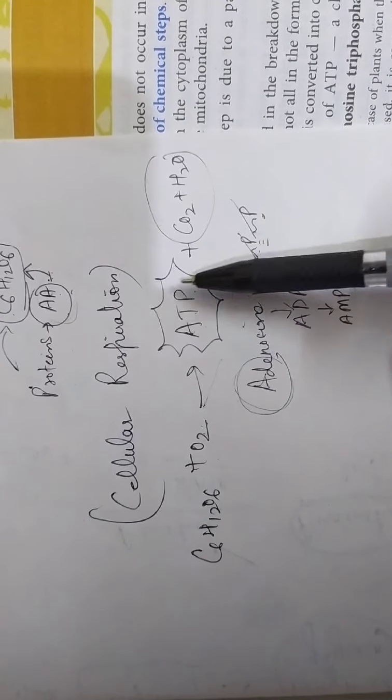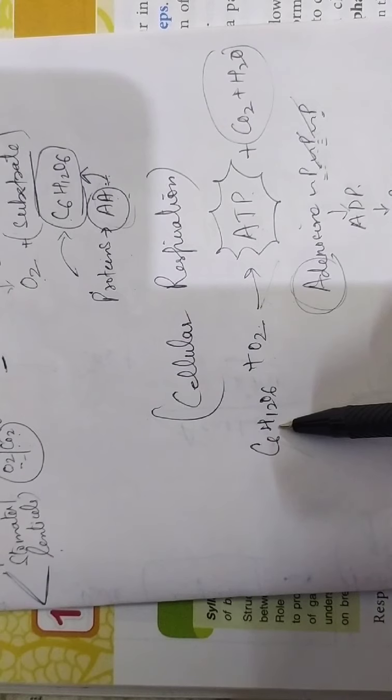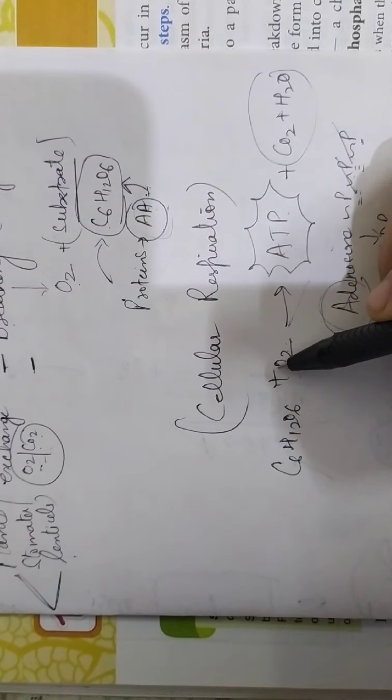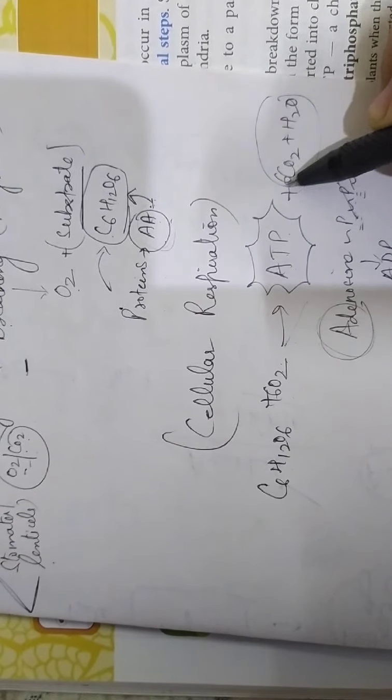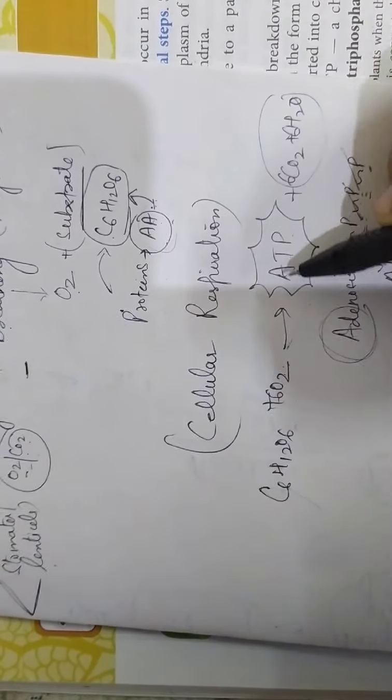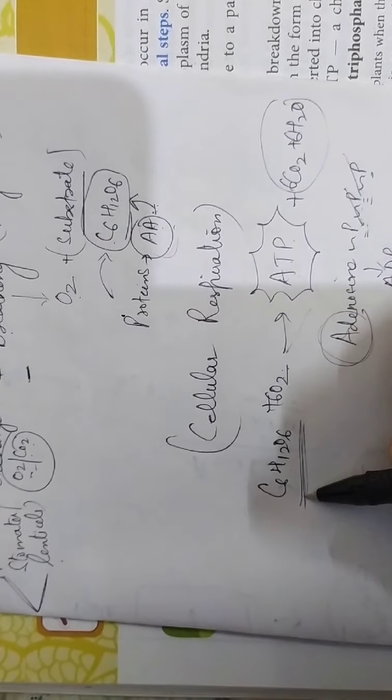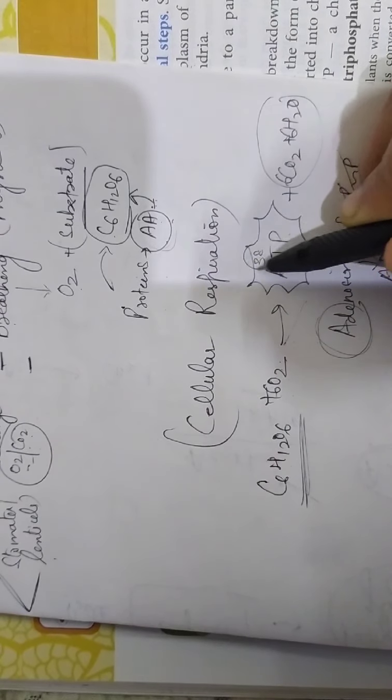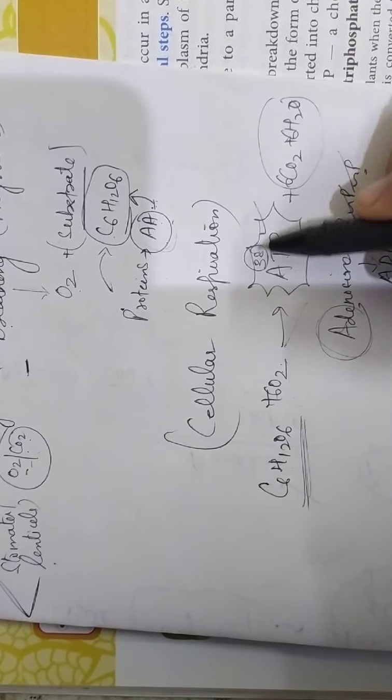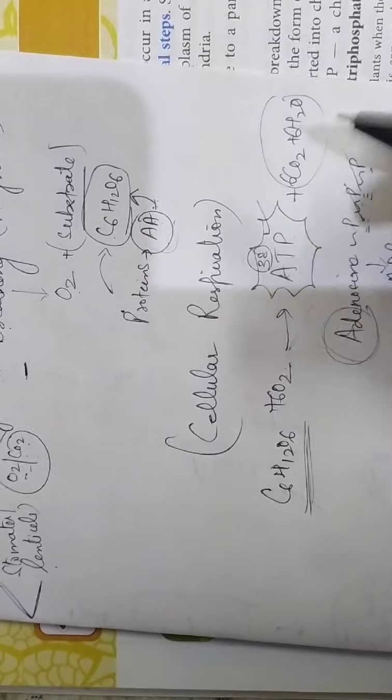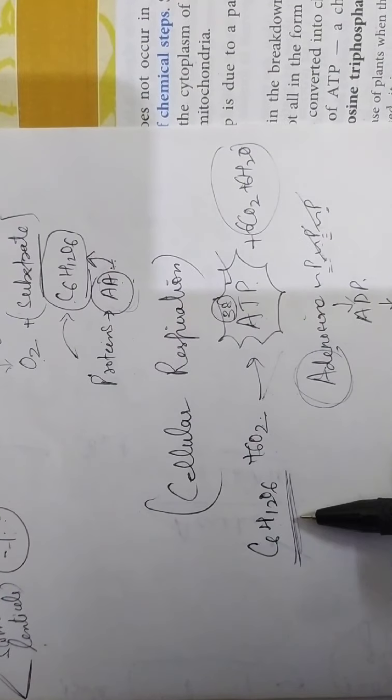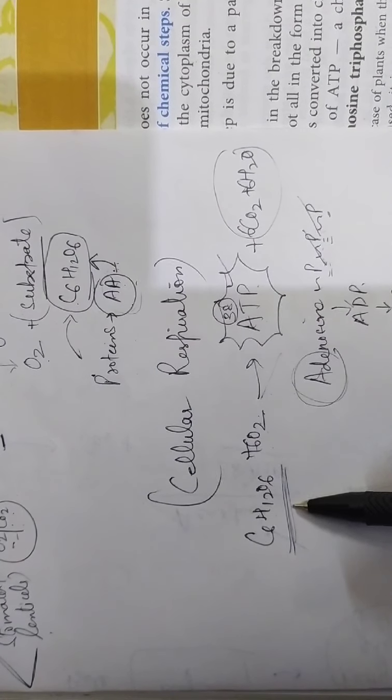Actually one molecule of glucose when combined requires 6 oxygen and produces 6 carbon dioxide, 6 molecules of water. And one molecule of glucose produces 38 ATPs. 38 molecules of ATP are produced by the oxidation of one glucose molecule.